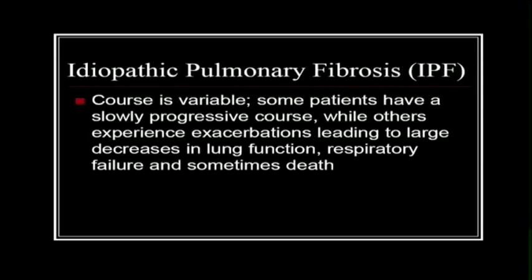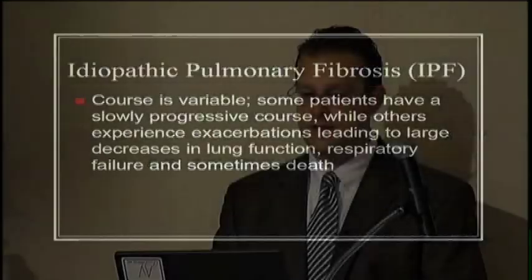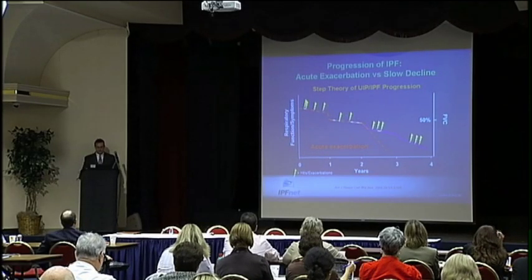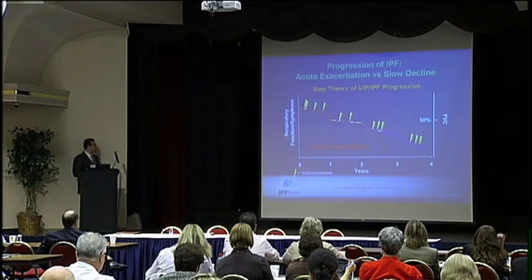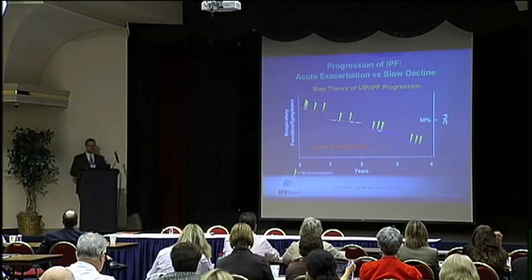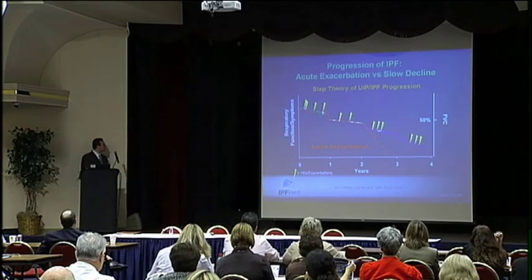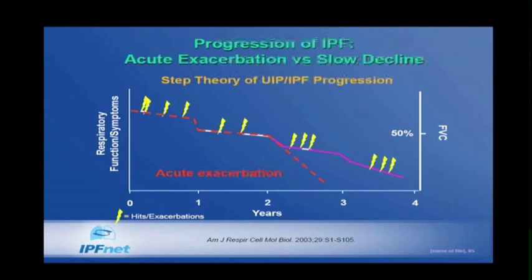The course is variable. Some patients have a slowly progressive course, while others experience exacerbations that lead to large declines in lung function, respiratory failure, and sometimes death. It's not thought that IPF progresses along a straight line, but rather that there are multiple hits along the natural history causing progressive declines in respiratory function. Some can be so severe they produce precipitous drops and cause respiratory failure. The pathology in those cases is diffuse alveolar damage superimposed upon the UIP.